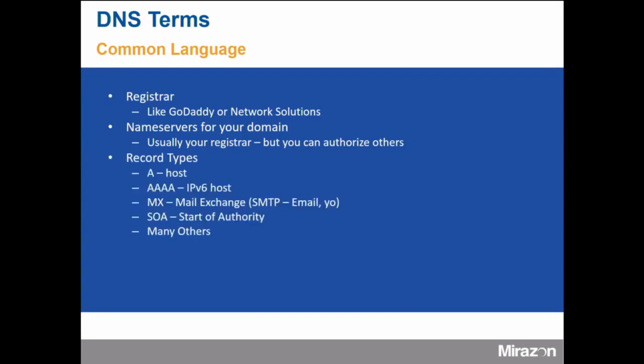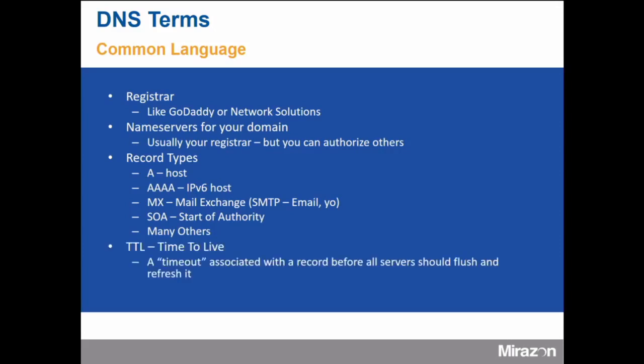You have record types, like the A record, which is a host — www. Or a quad-A record for your IPv6 people. Who's doing IPv6? How many IP addresses are left to be handed out in the world? Zero. You have MX records, which is how email works. You've got a Start of Authority record — this is what identifies a name server as being authoritative for your domain. And then there are many others, of course.